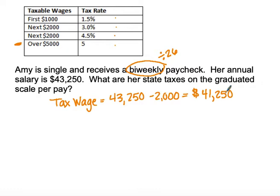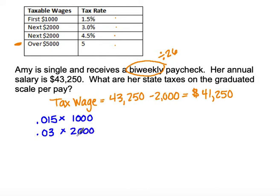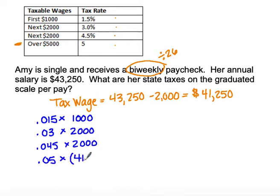Now we're going to take the series of the graduated scale. Out of that $41,250, the first $1,000 is going to be taxed at the 1.5% level. Then we're going to take 3% of the next $2,000, and 4.5% of the next $2,000. So we've now used up $5,000 out of her gross taxable wage. The last tier is at 5%, and she's going to pay 5% on what is left — that taxable wage minus the first $5,000 from the first three tiers.